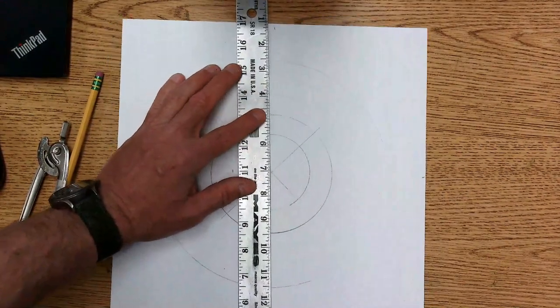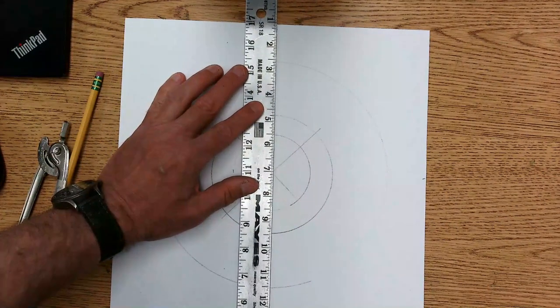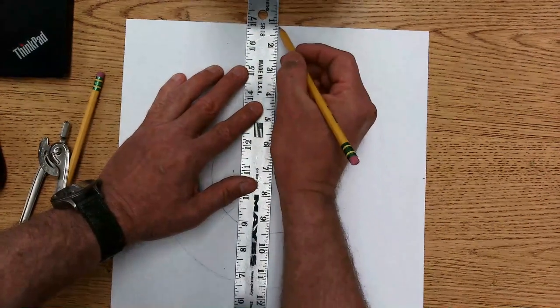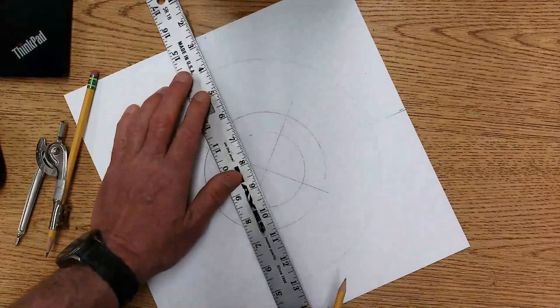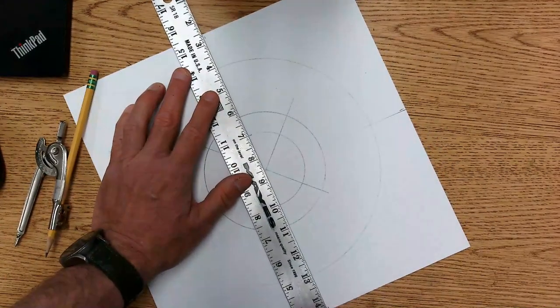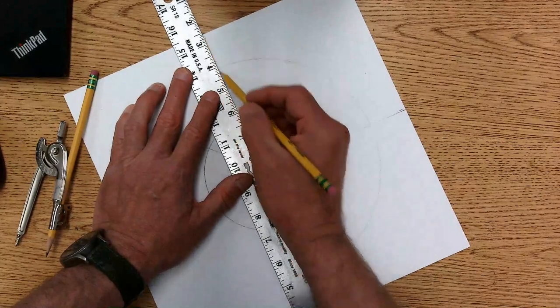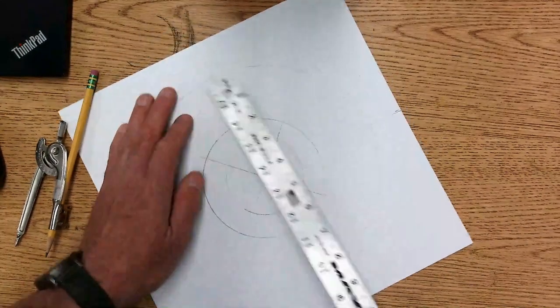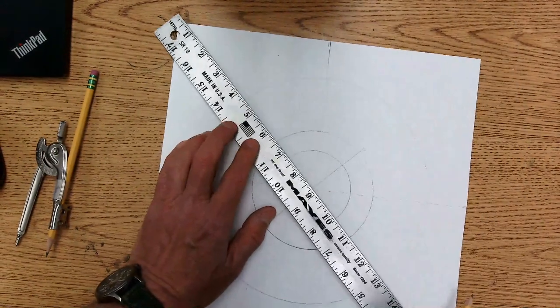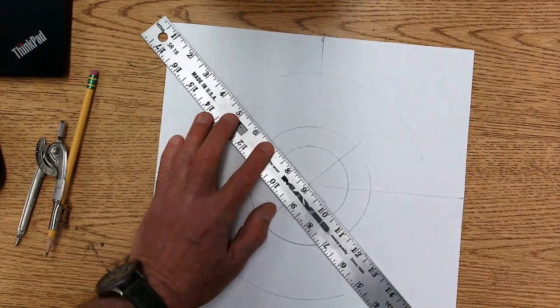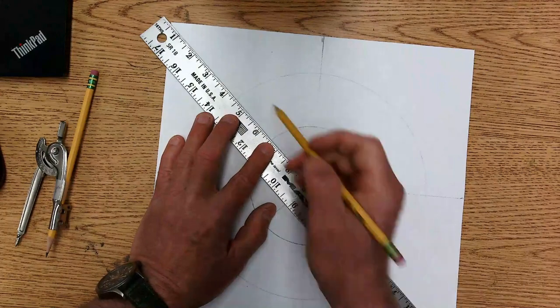Then I'm going to connect those marks very lightly, and that gives me a sort of cross line in the center. There we go, and that's a really good starting point for the design. I've got lines, and I'm going to finish this X here so you can see some more lines.